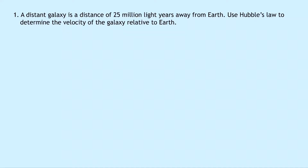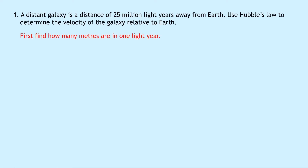Question one says that a distant galaxy is a distance of 25 million light years away from Earth. Use Hubble's law to determine the velocity of the galaxy relative to the Earth. Notice in the question that we're given a distance in light years, so in order to get this into something we can use in calculations, we need to first find how many meters are in one light year. We can use speed-distance-time to find the distance, where our speed is the speed of light and our time is how many seconds make up one year.